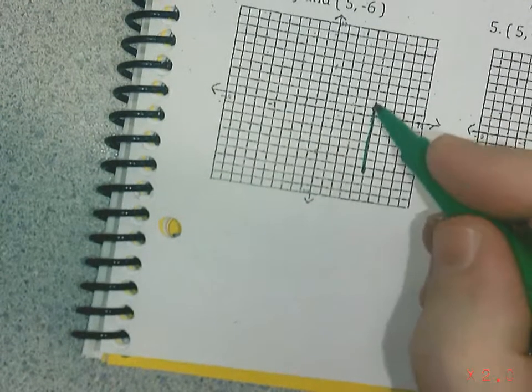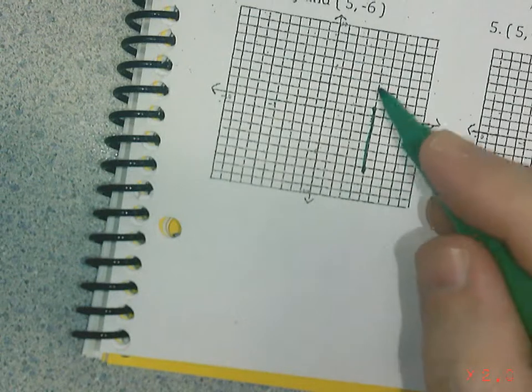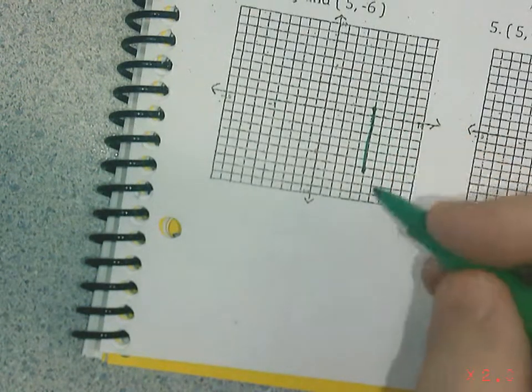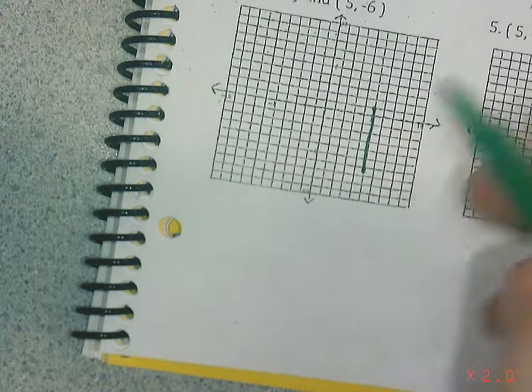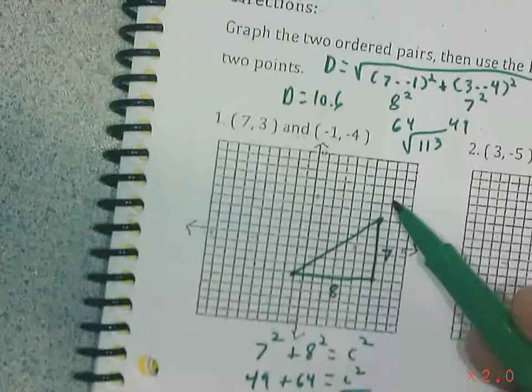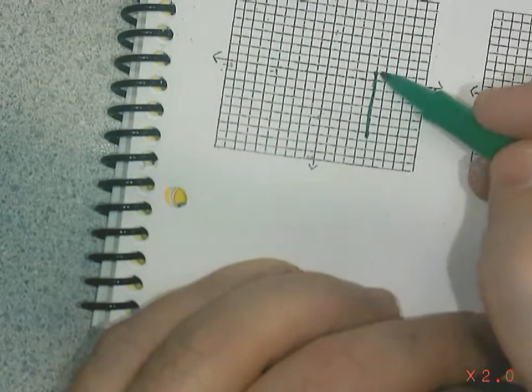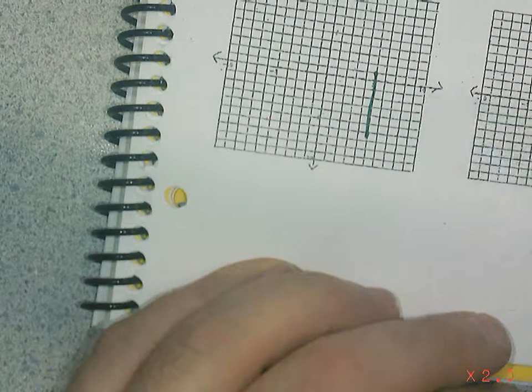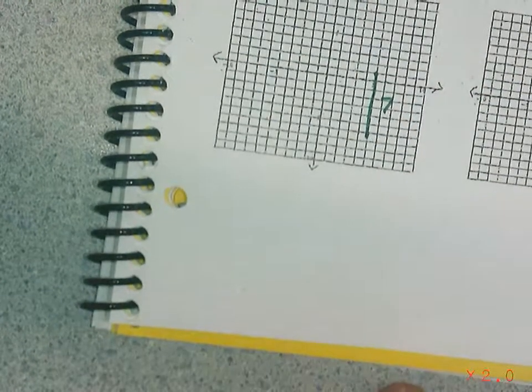So how would I make that into a right triangle? It's not really something that I want to do, right? Because if it's a vertical line, how did I find the length of this leg right here? I just counted it, right? Couldn't I do the same thing here? So one, two, three, four, five, six, seven. So I'm going to say my answer is seven.